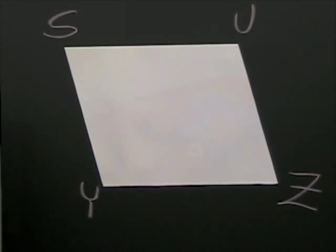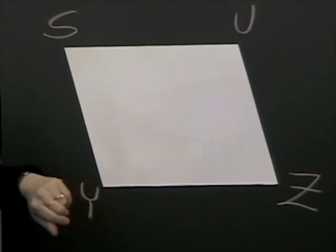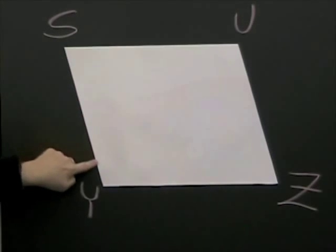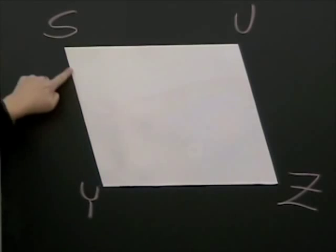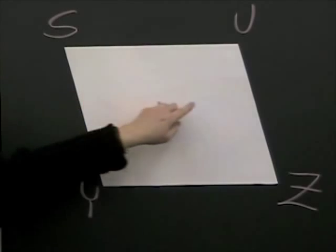So, we need to drop a line that is perpendicular from SU to YZ. Now, notice these sides here are not perpendicular to SU and ZY, so they cannot be considered the height.